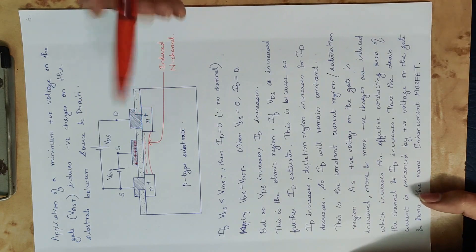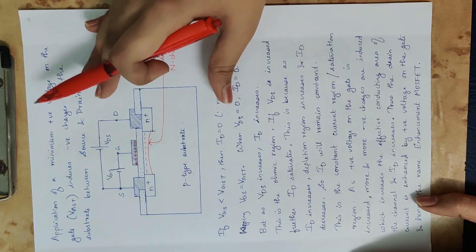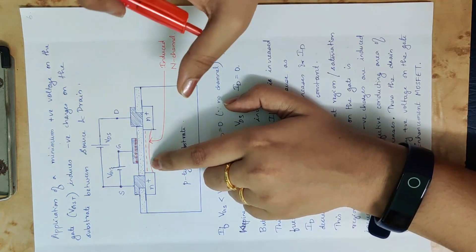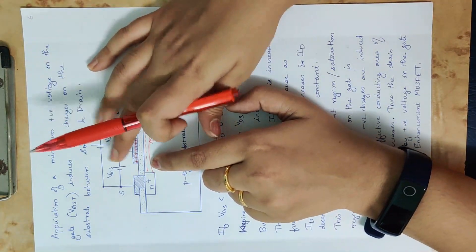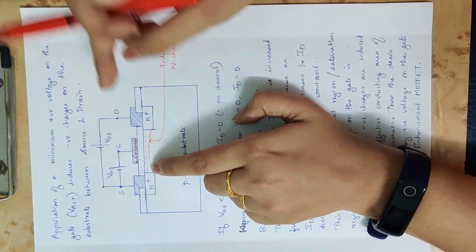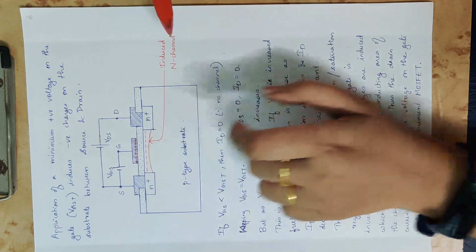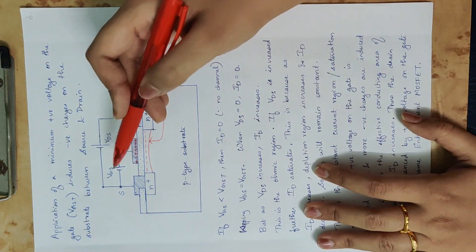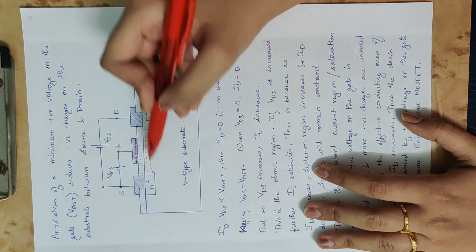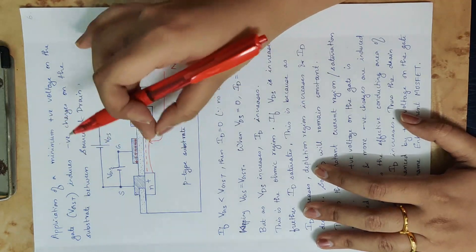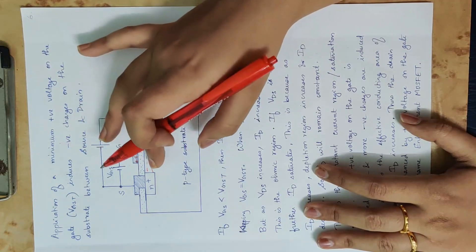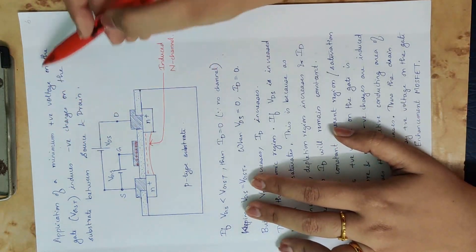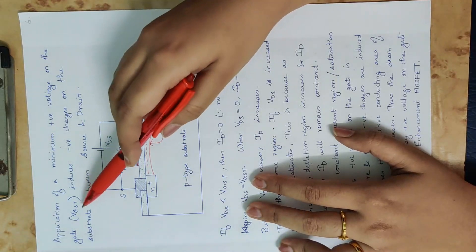Negative charges are induced — this is an induced N-channel constructed in the E-MOSFET. There is no channel by default. If you apply a gate voltage, the electrons are attracted and a channel is created. This is the induced N-channel. A minimum positive gate voltage is required — if you want only one or two electrons, the channel is not complete.